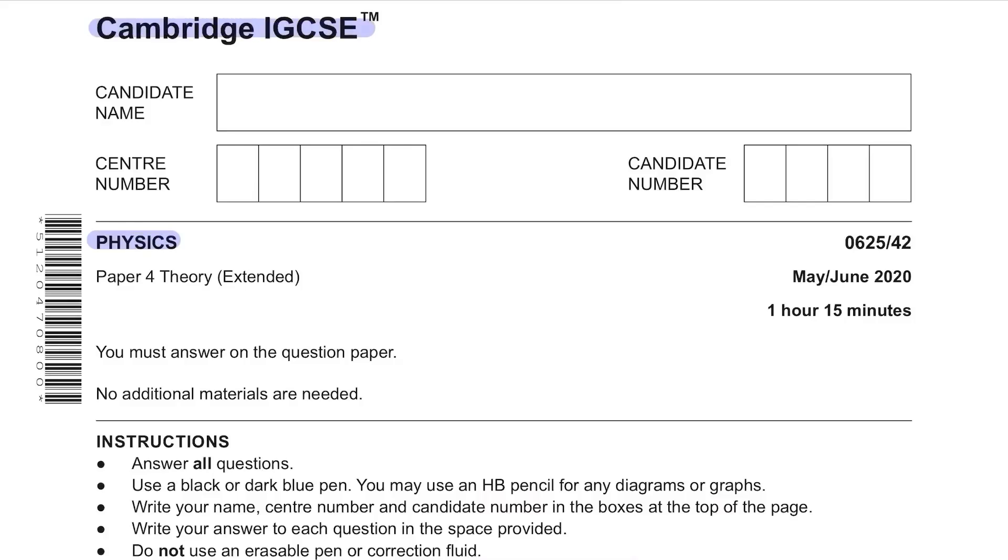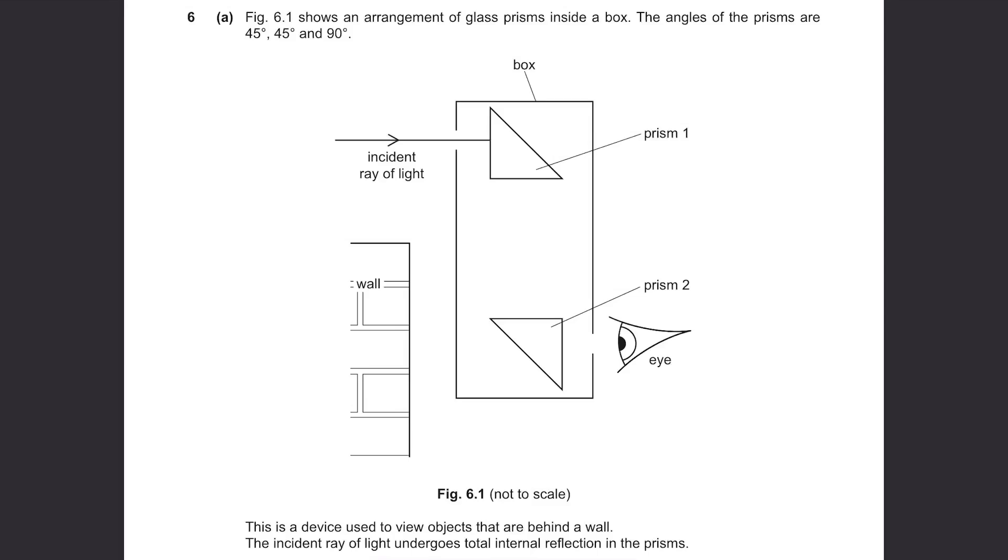Cambridge I.G.C.S.E. Physics Major 2020 Paper 42 Part 2. Question 6, Part A.